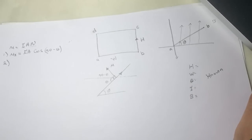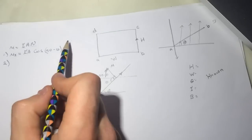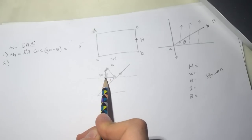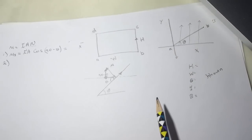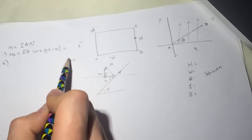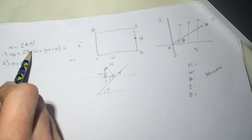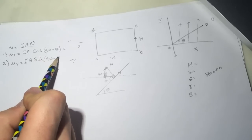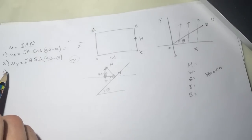Number two asks for uy, the y-component of the magnetic moment vector. Looking at the diagram, the x-component points in the x-direction and the y-component points in the positive y-direction. So uy = I·A·sin(90 − θ), positive in the y-direction, again with n equal to 1 turn.